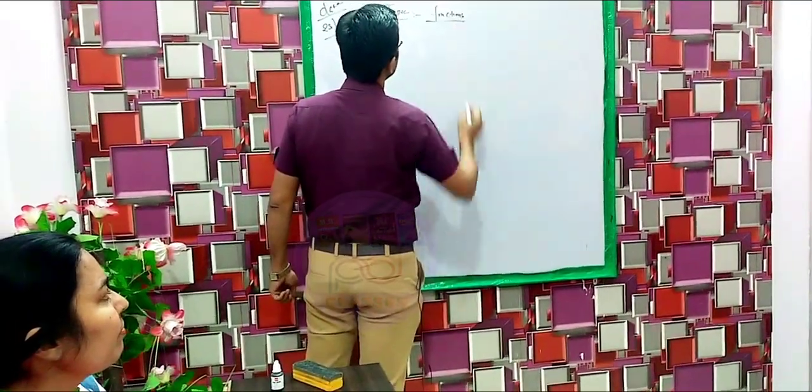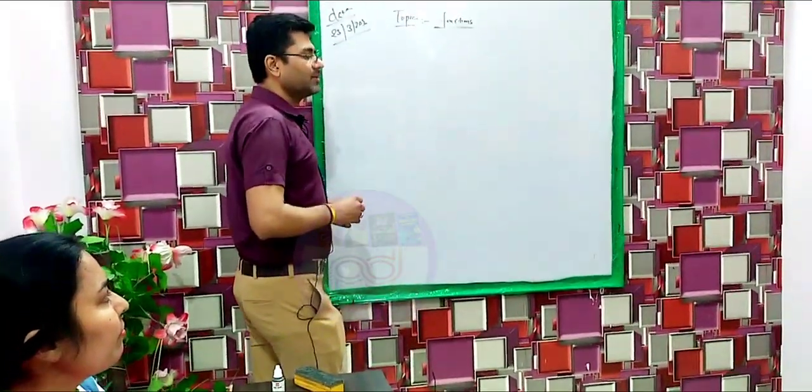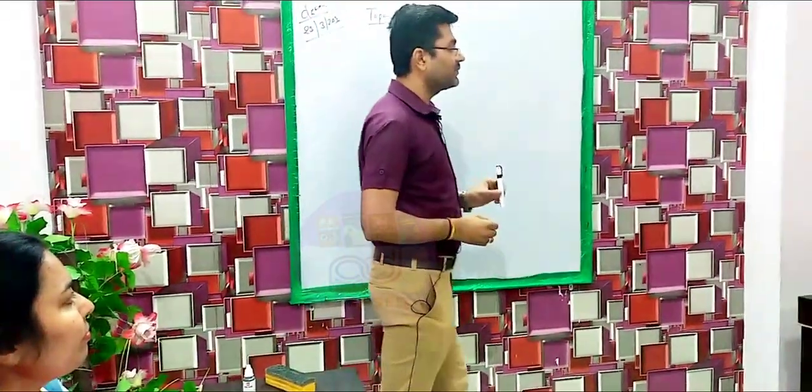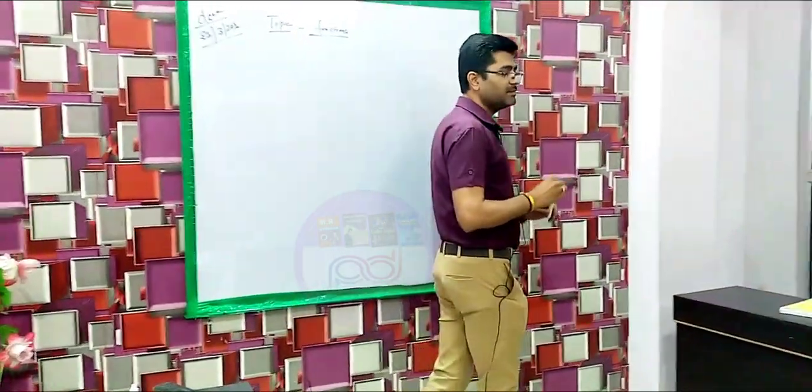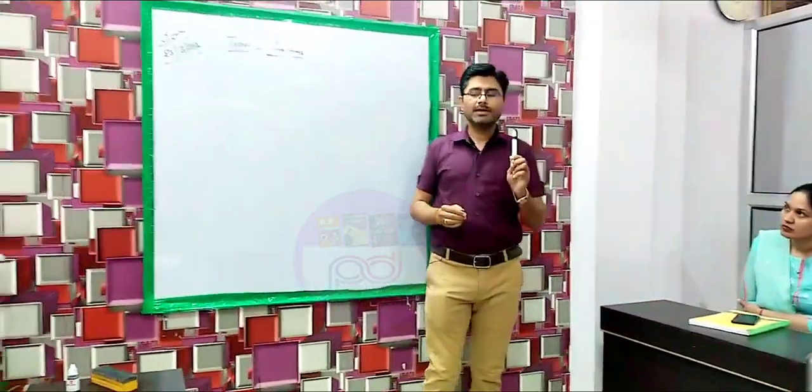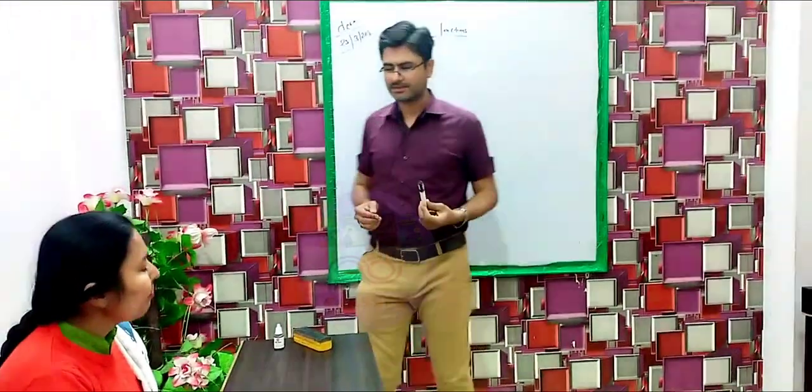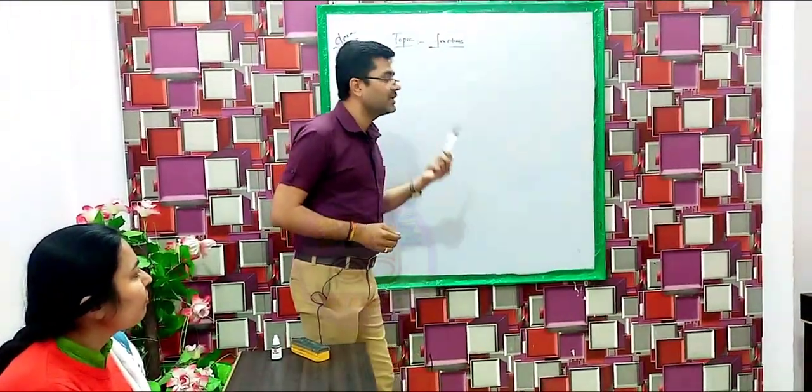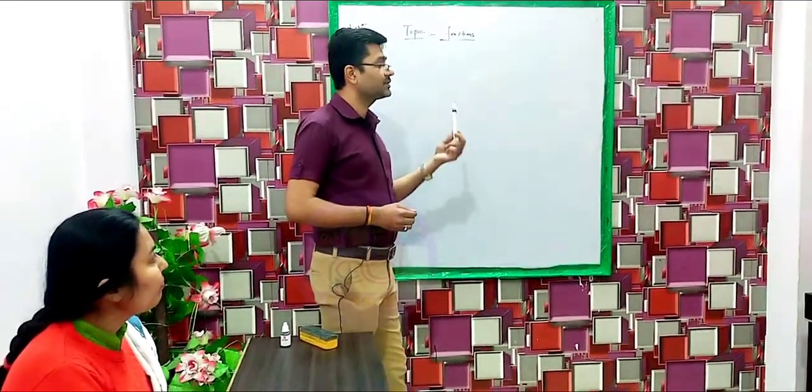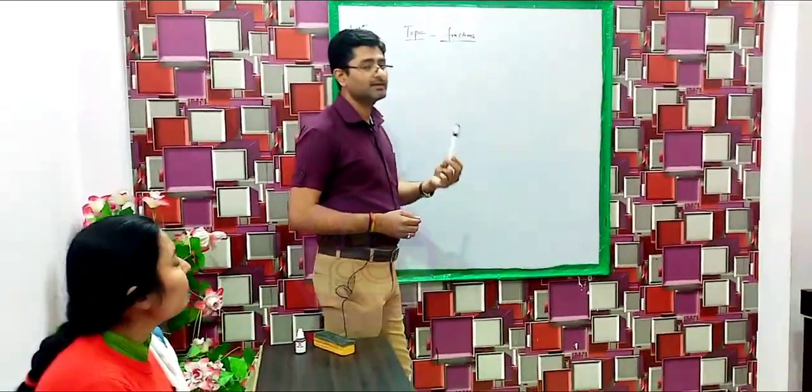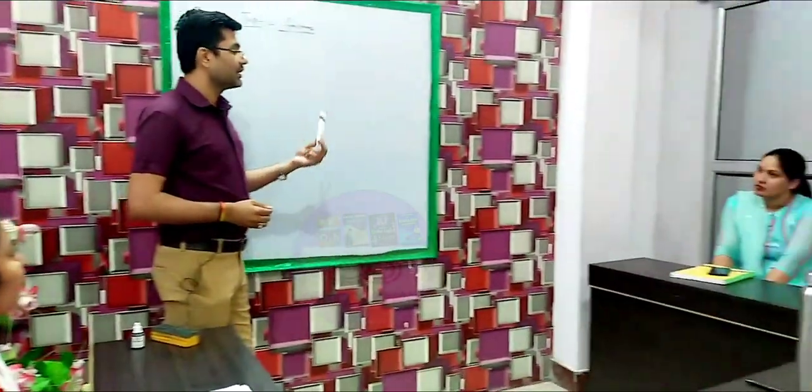So students, you already know any object must have some kind of function. For example, if I am using this marker, the main function of this marker would be that it is able to write on the board. If this marker is not functioning well, I can say it is outdated or it needs to be updated.